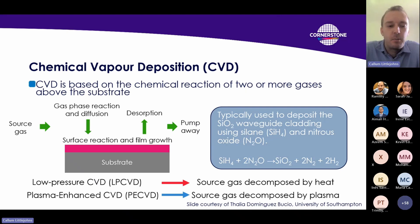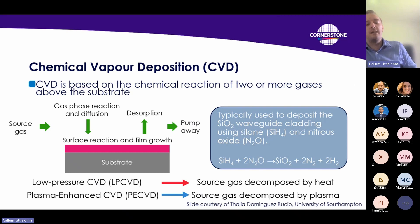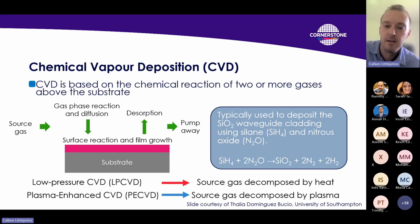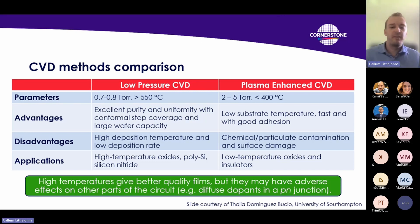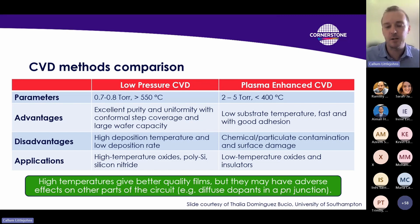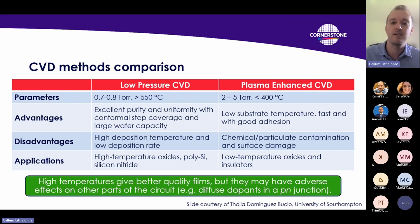In the low pressure system, the gases are decomposed by heat, whereas in the plasma system they're decomposed by a plasma. This slide compares the two. A general rule of thumb is that higher temperature gives you a better quality film, so you might think: why don't we always use low pressure CVD at a very high temperature to get the best quality films?